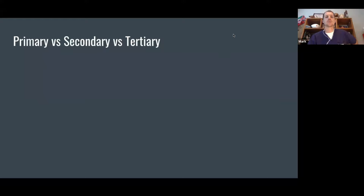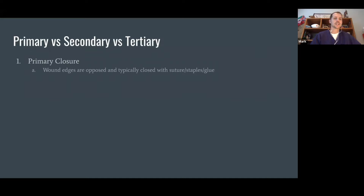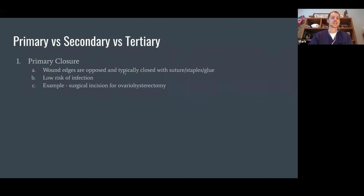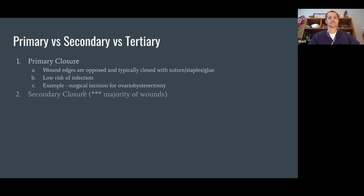It's good to be aware of the different closure types. We have primary, secondary, and tertiary. Primary closure is when you have wound edges that are pretty much opposed or very close to one another, and they can typically be closed with suture, staple, or glue. There's a low risk for infection. The most common example is a surgical incision like a spay or neuter — as long as we handled the tissues in an aseptic manner, there's a low chance of infection and we can close it up normally.